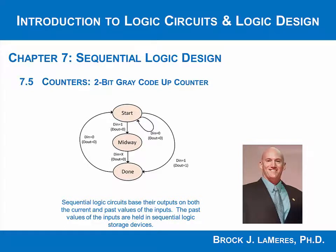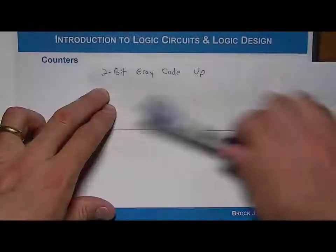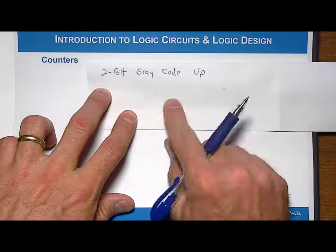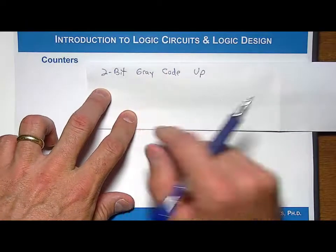Now let's look at a gray code counter. Let's build a 2-bit gray code up counter, meaning that it'll only count up. Now recall what a gray code counter is. It's one in which, as you traverse the states, only one bit ever changes.